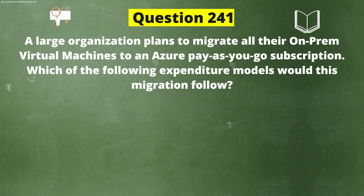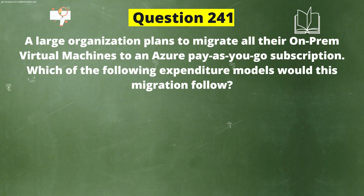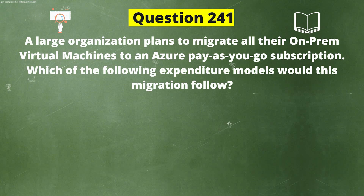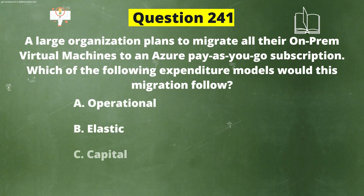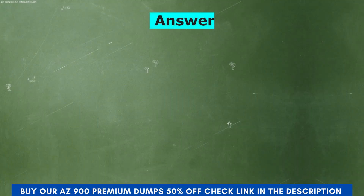Next question: A large organization plans to migrate all their on-premises virtual machines to an Azure pay-as-you-go subscription. Which of the following expenditure models would this migration follow? The options are: A) Operational, B) Elastic, C) Capital, D) Scalable. The correct answer is option A, Operational.